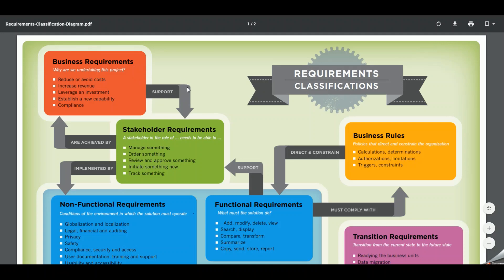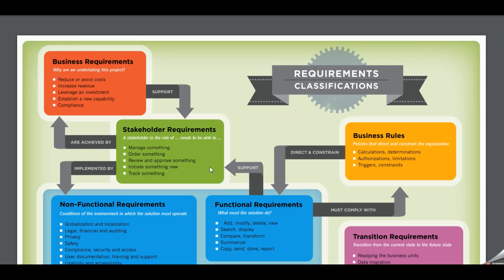Next is stakeholder requirements. Business requirements must support stakeholder requirements, and stakeholder requirements describe the needs of stakeholders that must be met in order to achieve the business requirements. For example: we would like to have a mechanism to monitor the response time for each vendor process on a daily basis in order to reduce lead time.